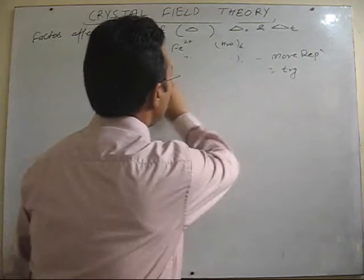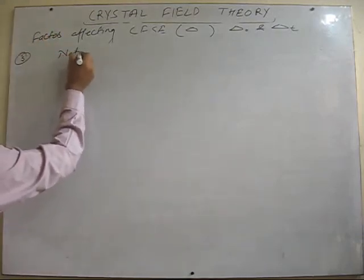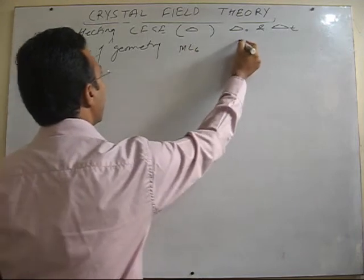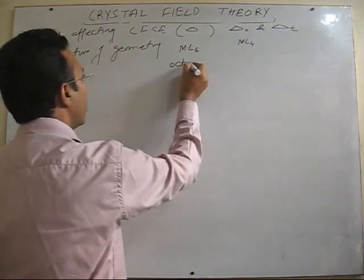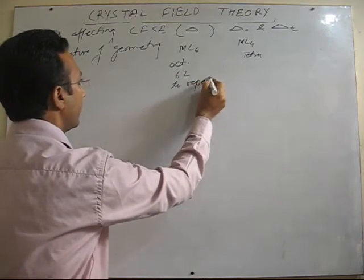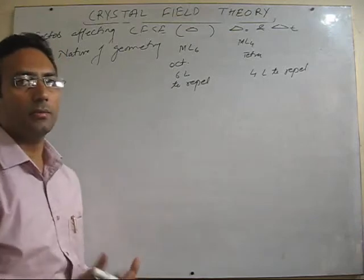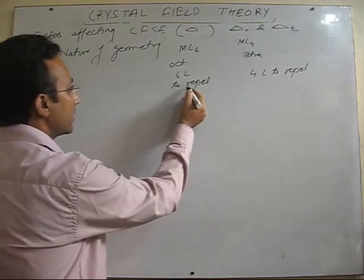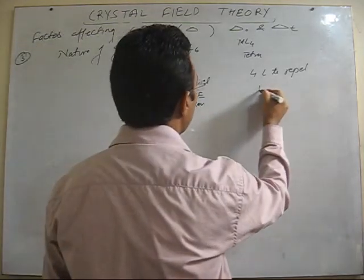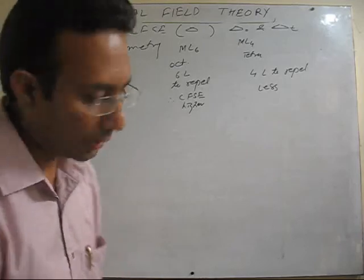The third point is the geometry of the complex. We have ML6 (coordination number 6) and ML4 (coordination number 4) — octahedral and tetrahedral. In these two cases, for octahedral there are 6 ligands to repel and for tetrahedral there are only 4 ligands to repel. So obviously 6 ligands will have more repulsion; therefore crystal field splitting energy will be higher in octahedral and less in tetrahedral.